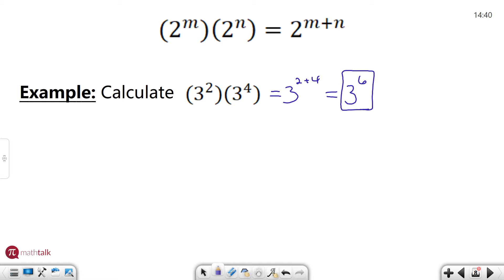So if you want to look at it and break it down even further, we have 3 squared which is 3 times 3 and we have that times 3 to the fourth which is 3 times 3 times 3 times 3 and again we have six different threes multiplied together which is 3 to the sixth.